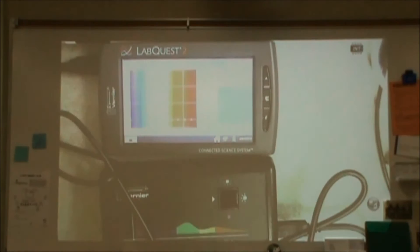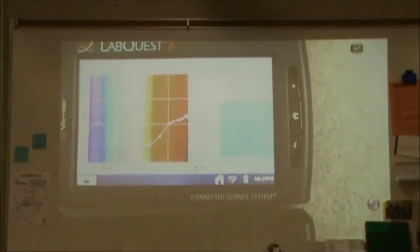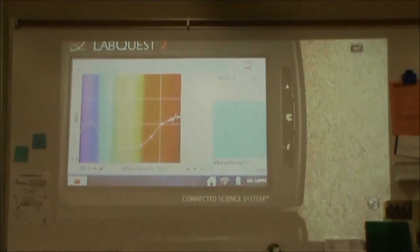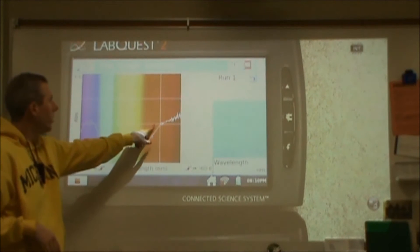Let's zoom in so we can get a nice picture of that. It's not easy to make out, but what I have here is purple, blue, green, yellow, and orange and red light.